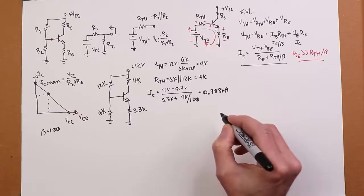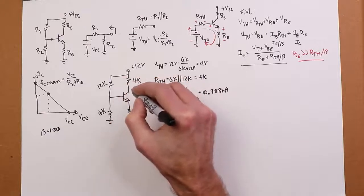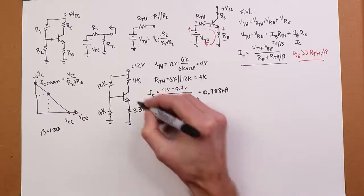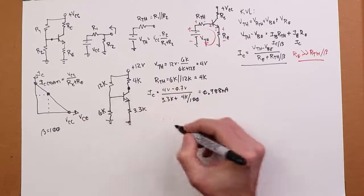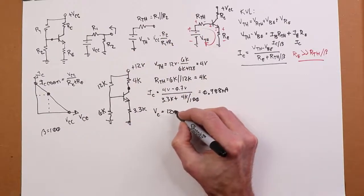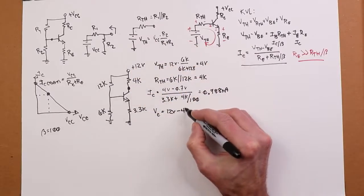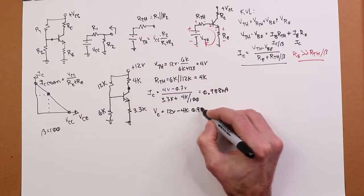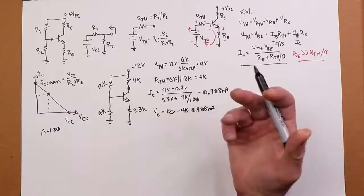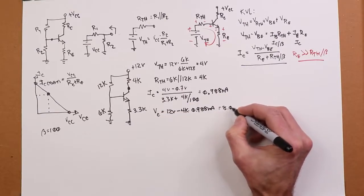Now, we can take that current through the same technique, we can find the voltages across various other components. So, for example, VC, collector to ground. Take your 12 volts, subtract the drop on the collector resistor, which is going to be 4K times the current we just found. Again, just Ohm's Law. That's all we're doing. KVL Ohm's Law. This works out to a little over 8 volts, 8.05 volts.